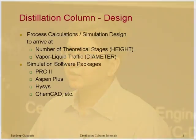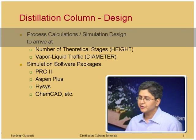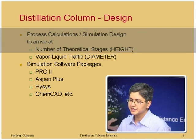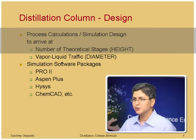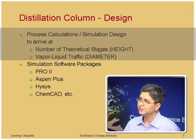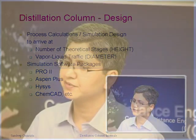The discussion will cover different column internals and their capability with respect to efficiency and vapor-liquid handling. For process calculations, simulation studies are used to arrive at the number of theoretical stages required, which translates into column height depending on internal efficiency. These calculations also generate vapor-liquid traffic data for determining column diameter. Various simulation software packages exist to identify the number of theoretical stages and vapor-liquid traffic required to achieve desired separation for the required purities and throughput.